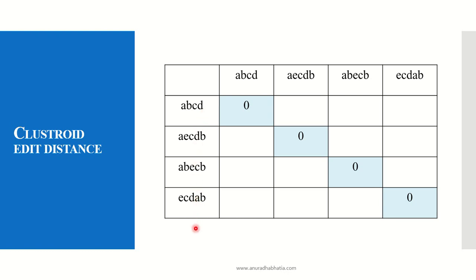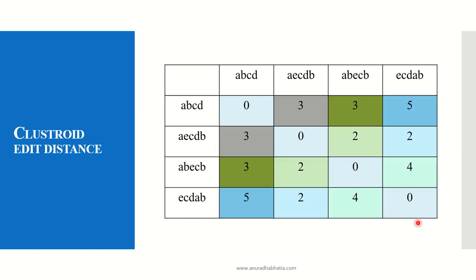We now form a matrix with all 4 strings on both the row and column axes. The diagonal is 0 since converting a string to itself requires no edits. Using the two formulas demonstrated, we fill the matrix. The same color indicates equal edit distances: ABCD to AECDB is 3, ABCD to ABECB is 3, and ABCD to ECDAB is 5.